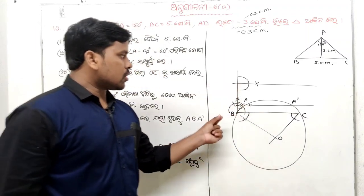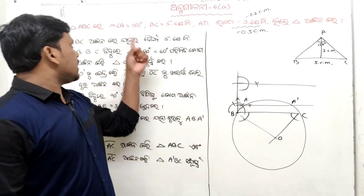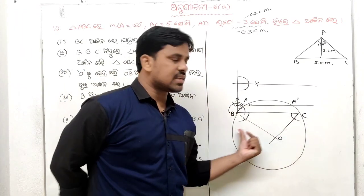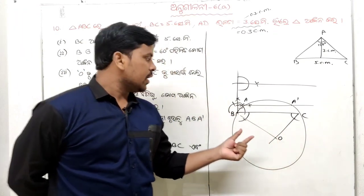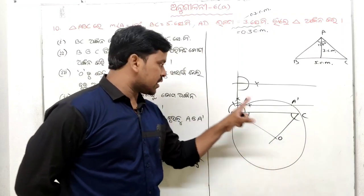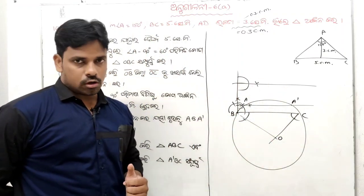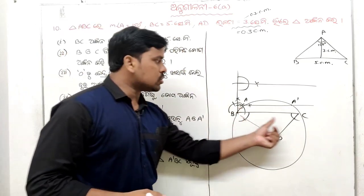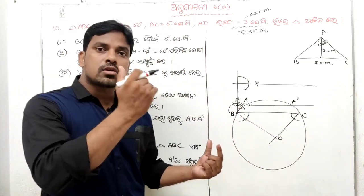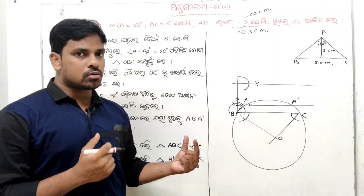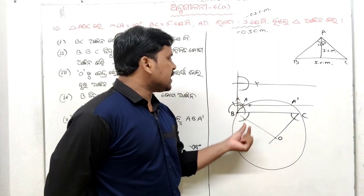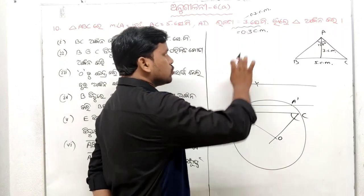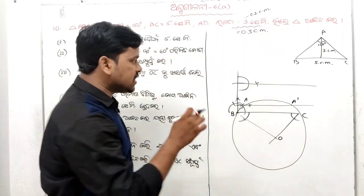Let's see. First, we did BC. Then we did 150 minus 90 minus 60. We did it in 60 degrees. Then we did it every year. We did it in the same place. There were a lot of people who did it, but we did it in B2C, and we did it in some way. Then we did it in B2C. So one question is 3 cm — we don't touch the value.